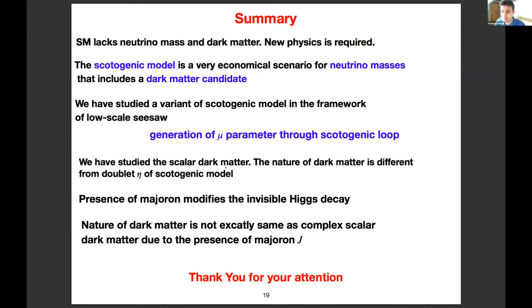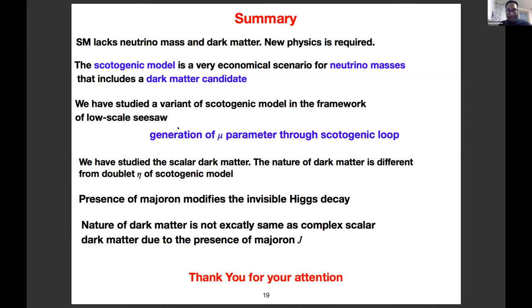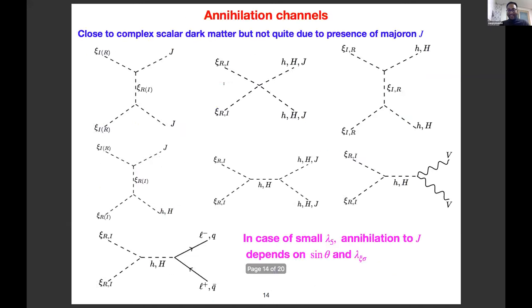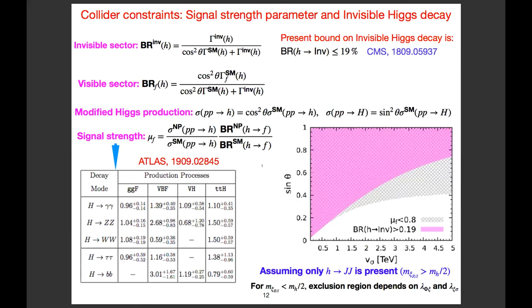Q&A: Tanya comments that the newest constraint on the Higgs-to-invisible branching ratio is 11%, so it would be interesting to update the results. The speaker acknowledges this would impact the analysis. Another question: is it really putting limits on the invisible branching ratio or the signal strength that is the best way to go after these models? The Majoron is massless so the Higgs-to-Majoron channel will always be there unless you take the mixing between SM Higgs and heavy Higgs to be zero.